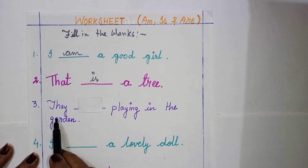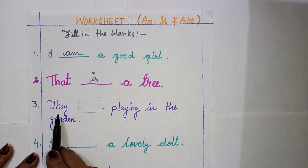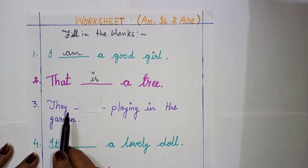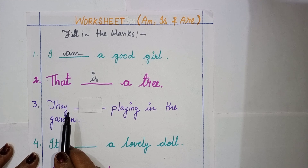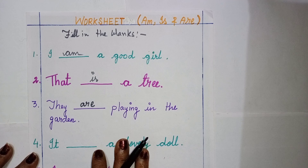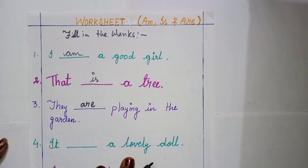Number three: they dash playing in the garden. They means more than one. So what will we write — they is? They am? No — they are. A-R-E. They are playing in the garden, because it means many people are playing, maybe boys, maybe girls.